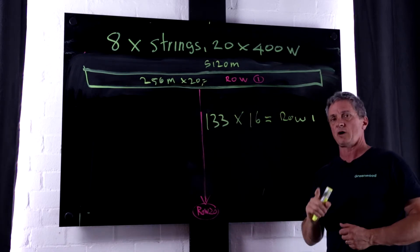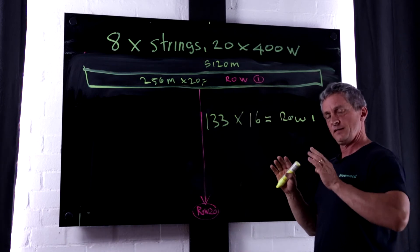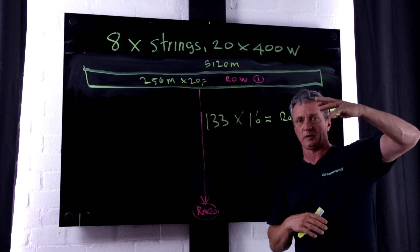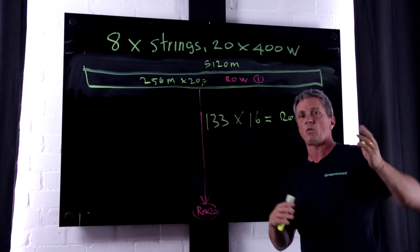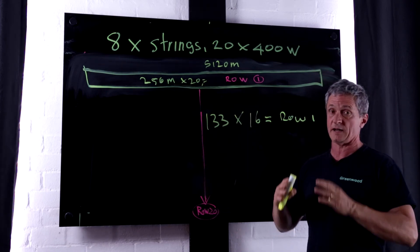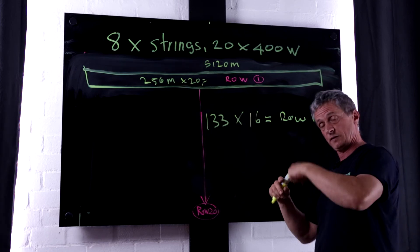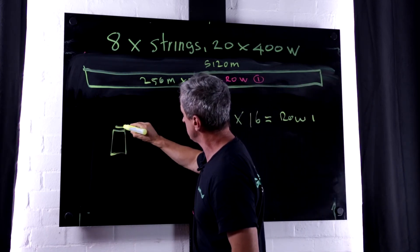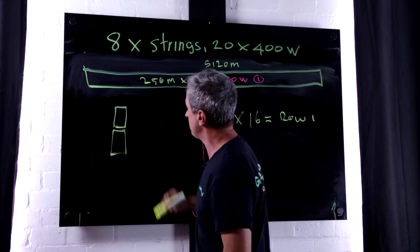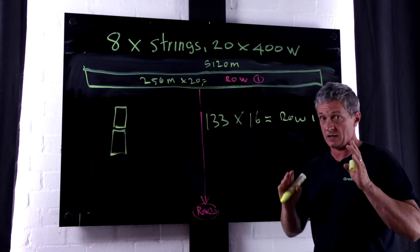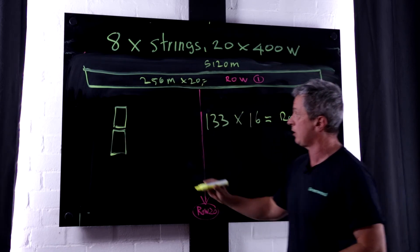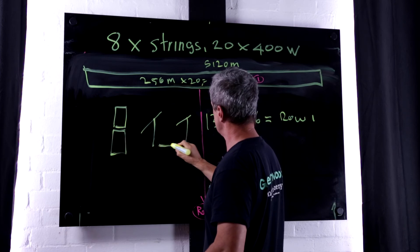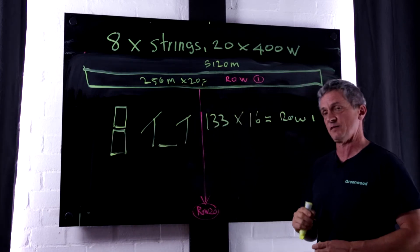Now what about row two? In this particular situation, because we're using panels that are quite squat, they're 1690mm long by 1046mm wide, in a two-tiered configuration with a 25mm gap. So effectively, like that, a bit of a gap. The spacing between the poles is only about seven metres.